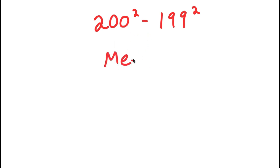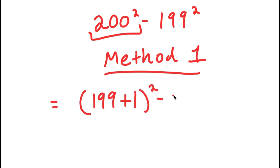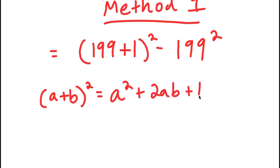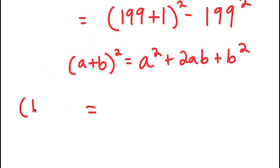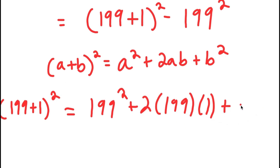For method number one, what I'm going to do is rewrite 200 squared as 199 plus one, squared. So now I have 199 plus one, squared, minus 199 squared. And if I have something in the form a plus b, squared, this is equal to a squared plus 2ab plus b squared. Now this means that 199 plus one, squared, should equal 199 squared plus two times 199 times one, plus one squared.